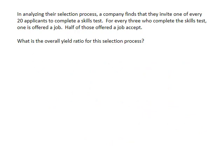Now using the same example, I want to show you another way to calculate yield ratios using straight math. First, you need to list all of your ratios down in order. Then you can multiply down each side of these ratios to get your final yield ratio.